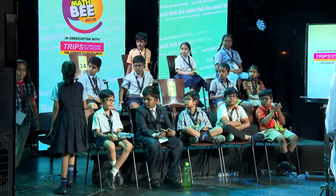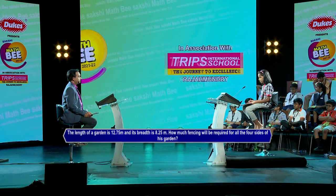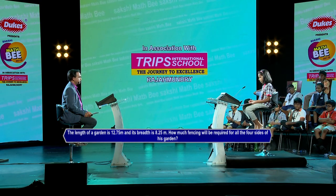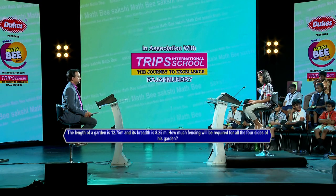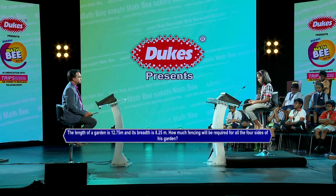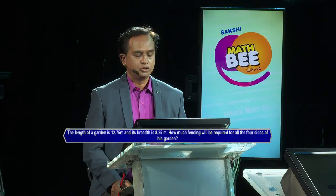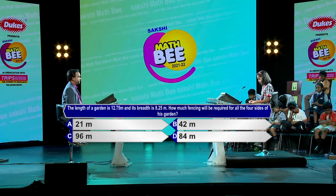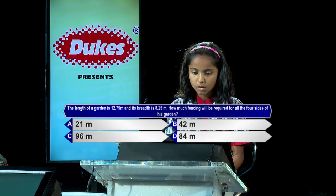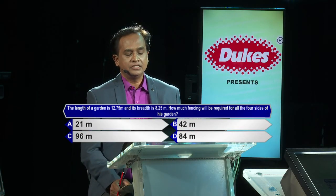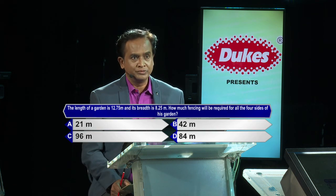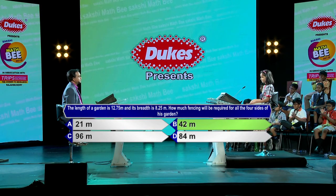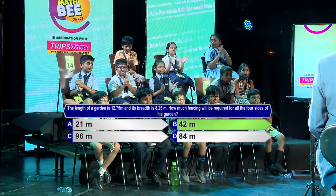Can we have G-Akshaya Reddy, Kendra Vidyalaya number 2, Uppal, Hyderabad. The length of a garden is 12.75 metres and its breadth is 8.25 metres. How much fencing would be required for all 4 sides of the garden? Options: A-21, B-42, C-96, D-84 metres. Contestant answers option B, 42 metres. And 42 metres is the correct answer. So we've got the winner for bronze — please give her a big round of applause.